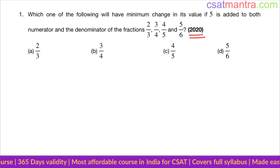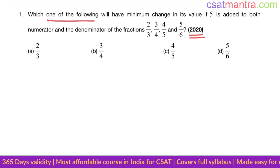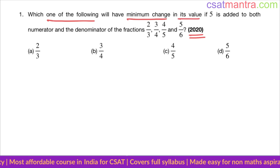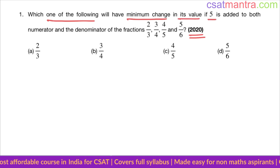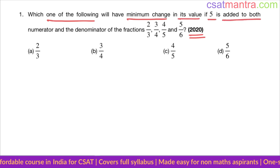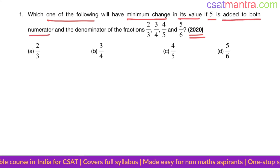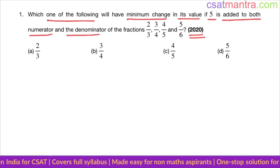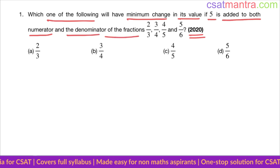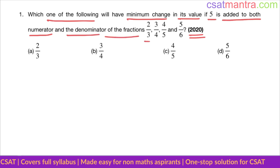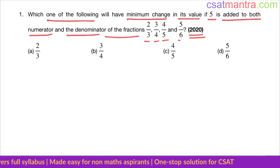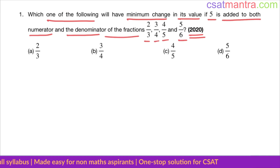Which one of the following will have the minimum change in its value if 5 is added to both the numerator and the denominator of the fractions? The options are: 2/3, 3/4, 4/5, and 5/6.